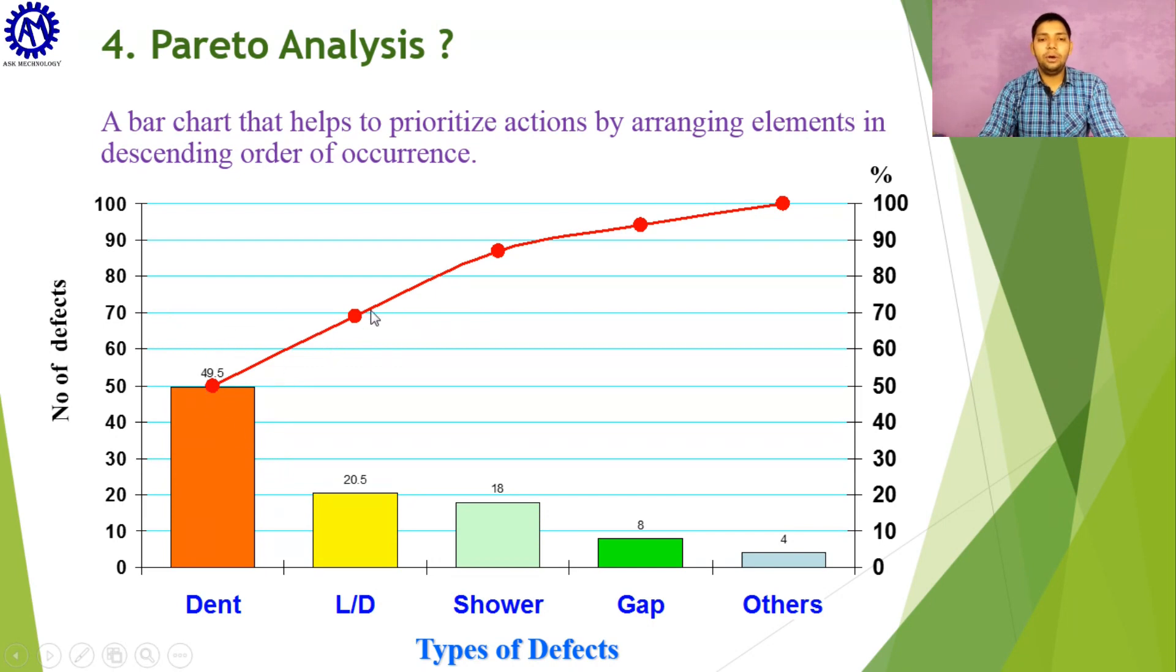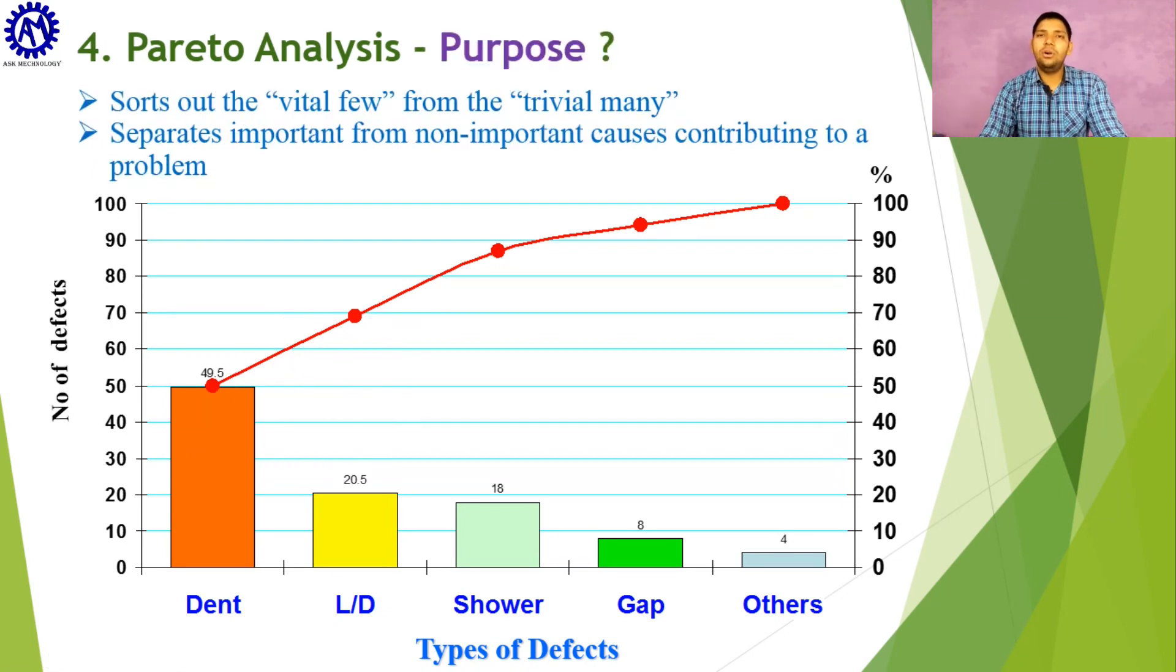It works on the 80-20 rule, as 80% of problems occur due to 20% of causes. In my next video I will explain in detail what is Pareto analysis and how we can create a Pareto chart in Excel. The purpose of Pareto analysis is to sort out the vital few from the trivial many.